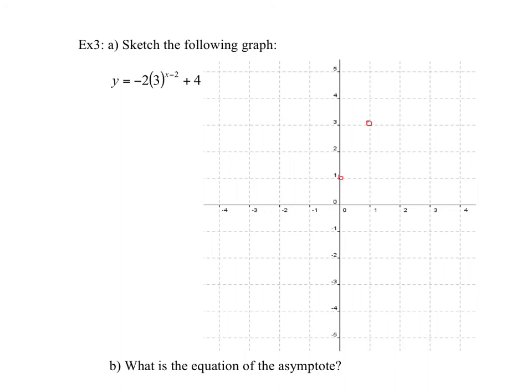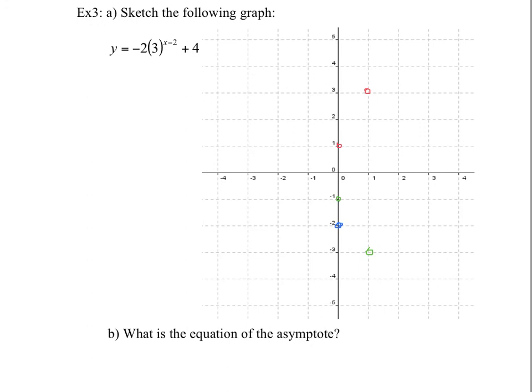First, we do the reflection over the x-axis, flipping those key points. Then the factor of 2 is a vertical stretch, so we double the y-values: the negative 1 doubles to negative 2, and the negative 3 doubles to negative 6 — which goes slightly off the graph.